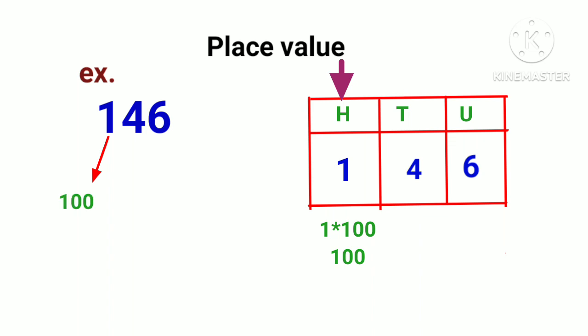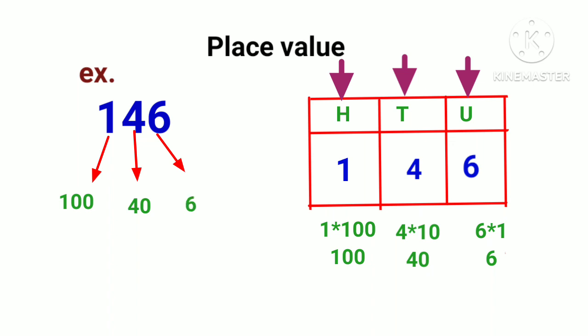Now T: 4 is in T's house, so the place value is multiplied by 10. 4 into 10 is equal to 40, so the place value of 4 is 40. Like this, 6: 6 is in U's house, so 6 into 1 is 6. So the place value of 6 is 6.